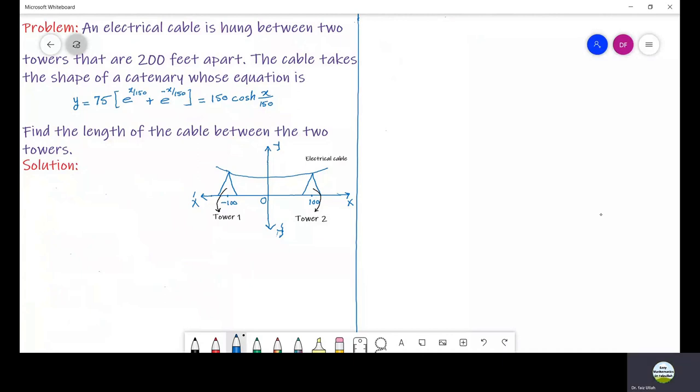To find the length of electrical cable, we use the arc length formula given by L equals integration from a to b of square root of 1 plus f prime of x squared dx.